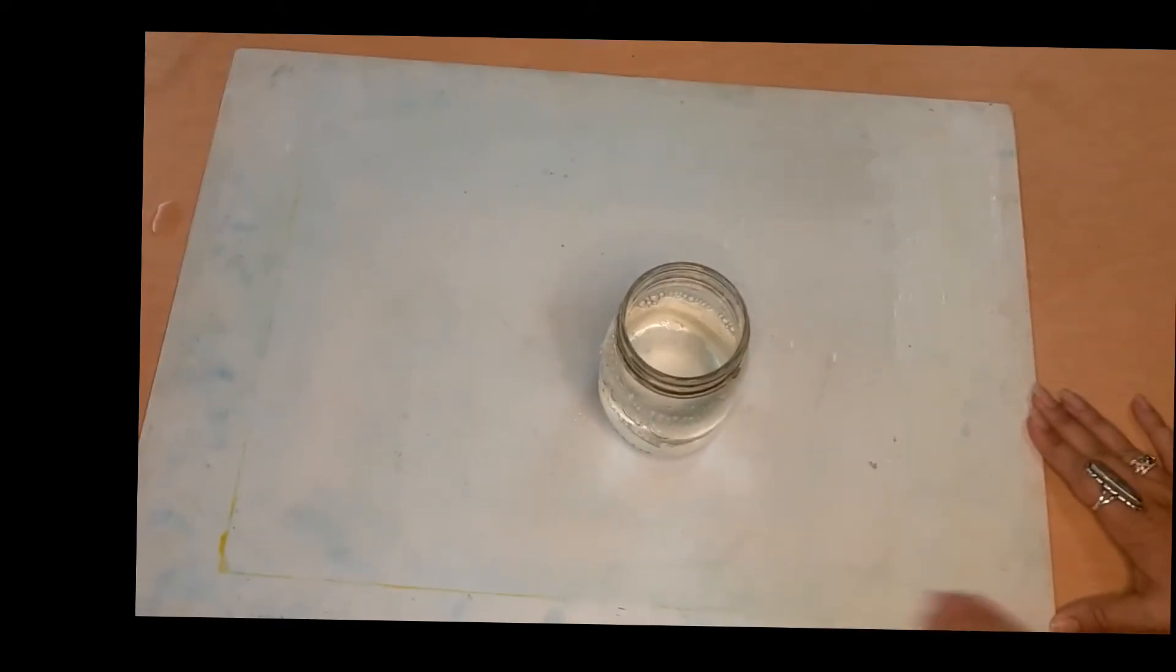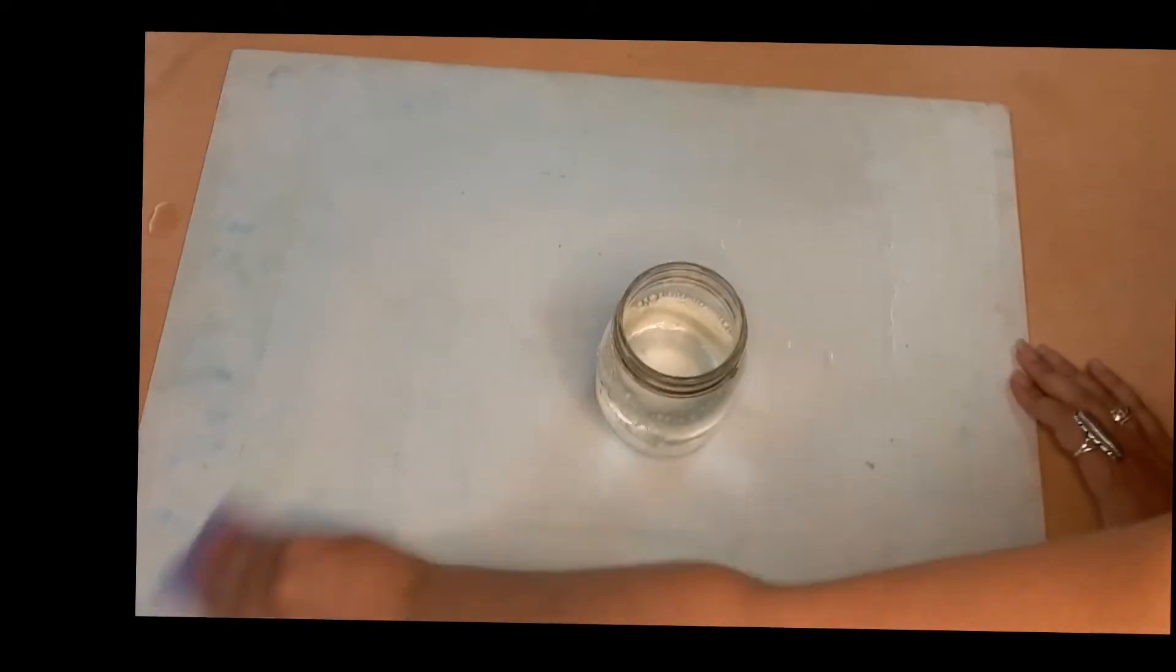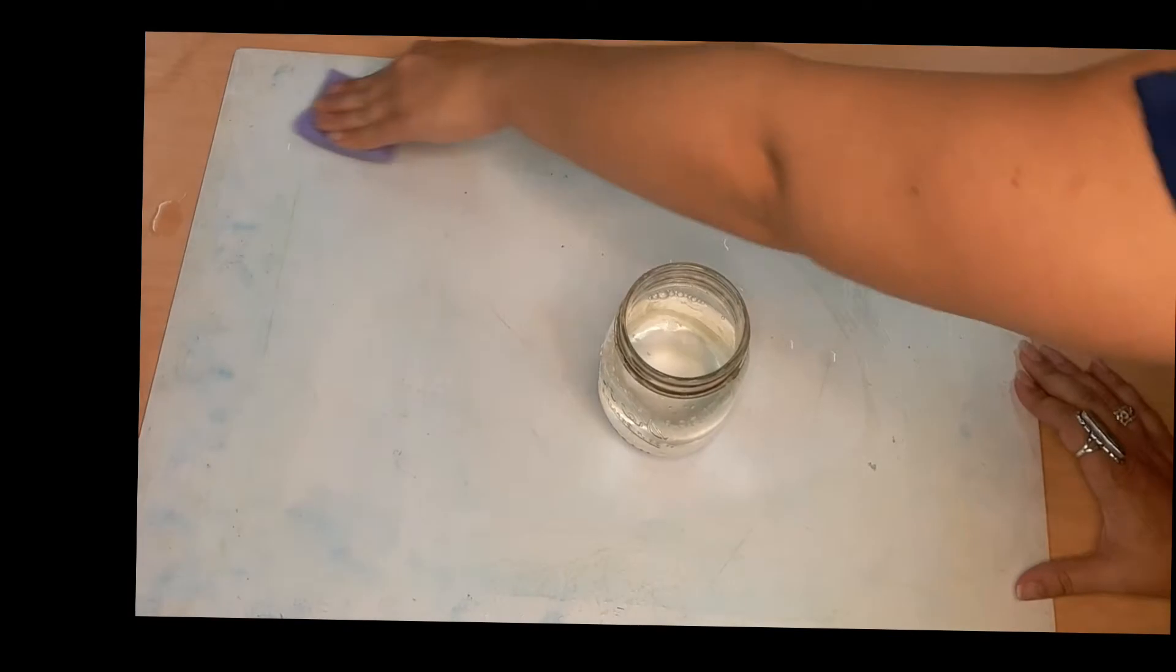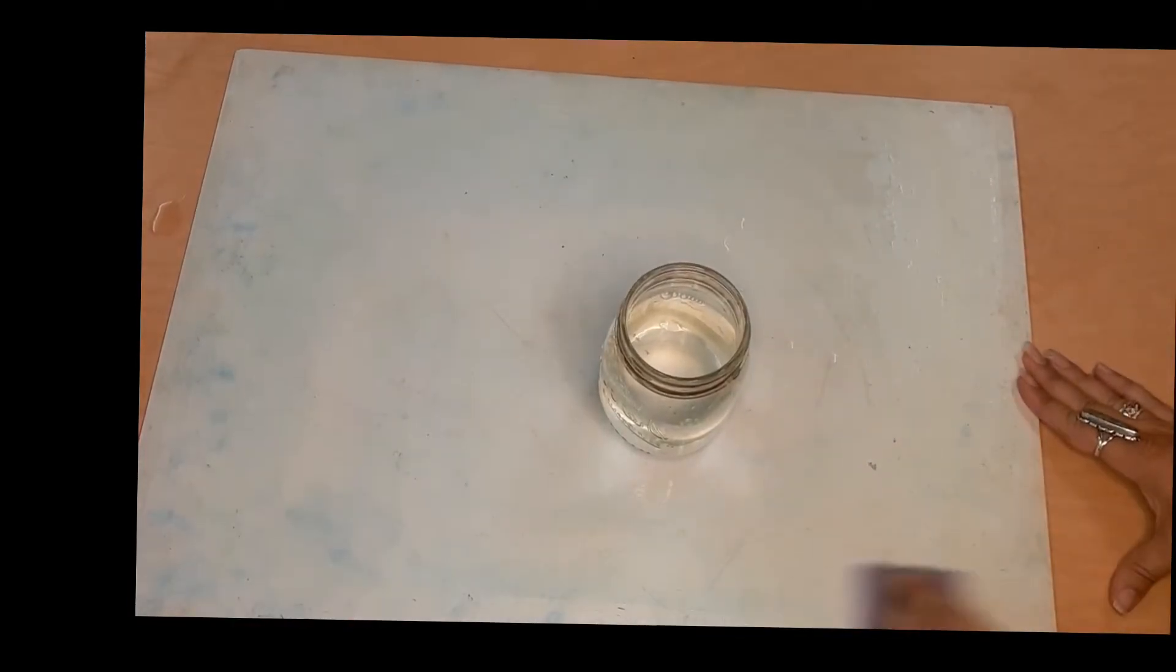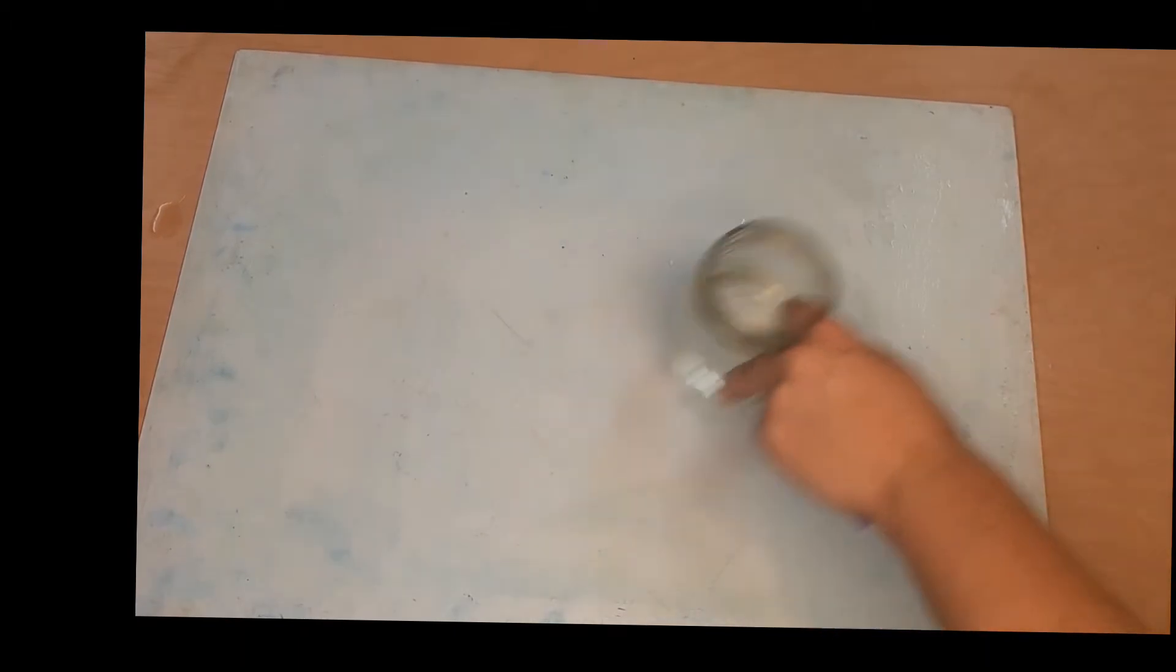Make sure that you clean your board very well since we just used it with yellow paint. Make sure that you've also soaked your paper in preparation for this.